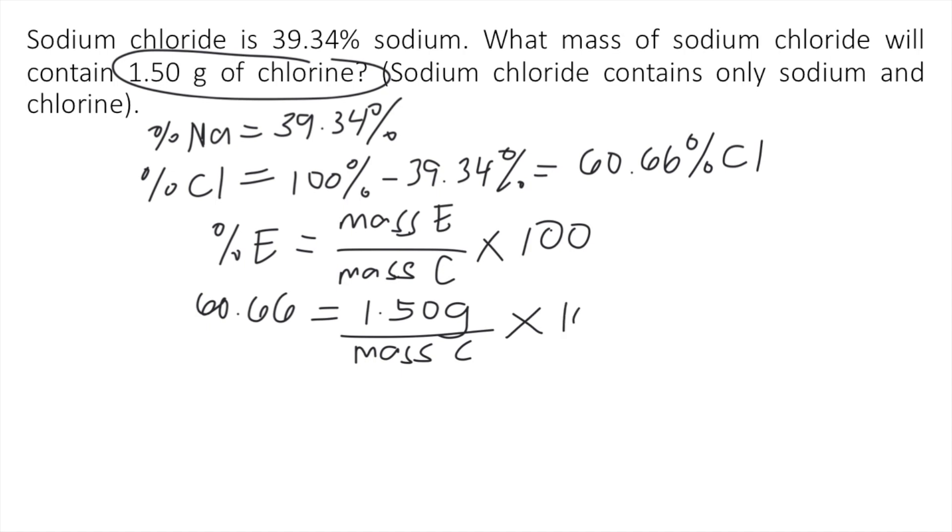So basically, we are solving for the mass of the compound, which is unknown in our equation. So how do you do that? First thing, you will divide both sides by 100. So as you can see, the 100 on the right side cancels out. So what's left on the right side is just 1.50 grams divided by mass of the compound.